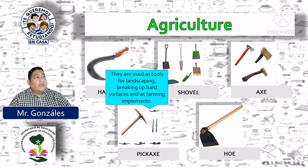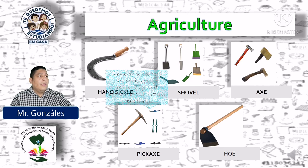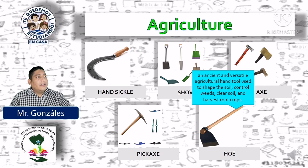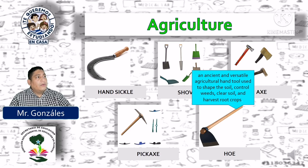Pickaxe: used as a tool for landscaping, breaking up hard surfaces and as a farming implement. Son utilizadas para la jardinería, romper superficies duras y como implemento de labranza. Hoe: an ancient and versatile agricultural hand tool used to shape the soil, control weeds, clear soil and harvest root crops. Una antigua y versátil herramienta manual de agricultura utilizada para darle forma a los suelos, control de maleza, limpiar el suelo y cosechar cultivos de raíces como tubérculos.